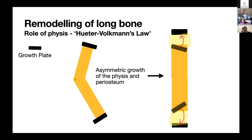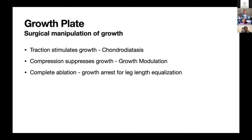Even before the metaphyseal or diaphyseal callus begins remodeling, the physis starts to right itself — we don't know the controls but it happens very consistently unless the growth plate is damaged. We can manipulate this: traction across growth cartilage forms bone — the concept of chondrodiastasis popularized by de Bastiani's group. Compression suppresses growth, which we use to modulate growth and correct angular and length discrepancies. If you apply enough compression, you can ablate the growth plate entirely.